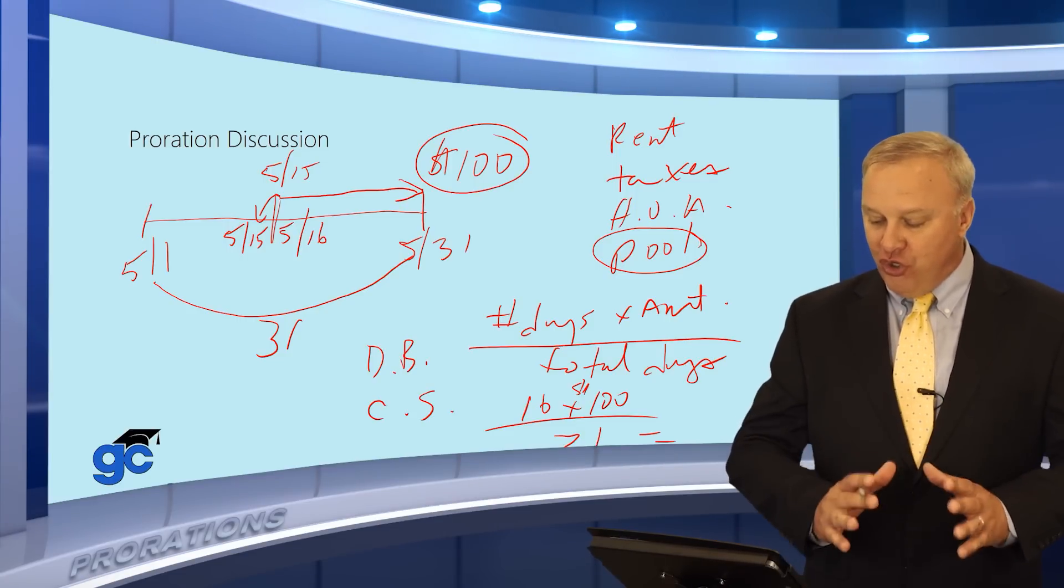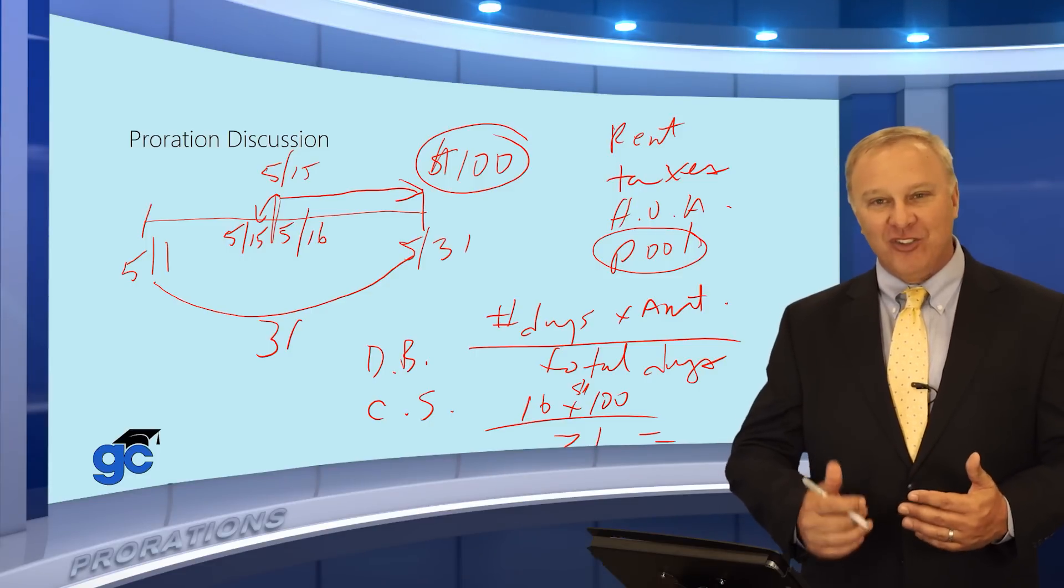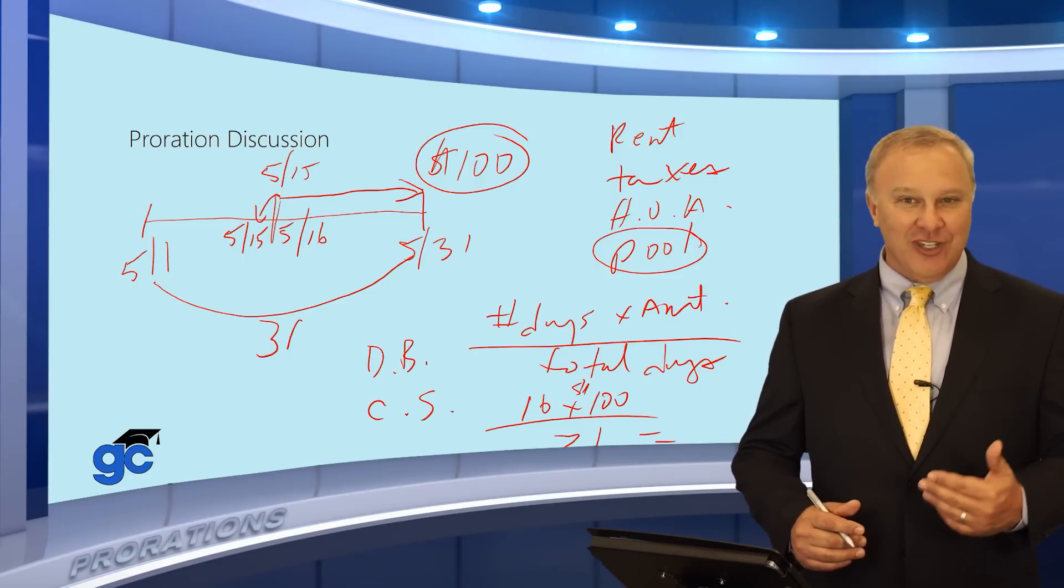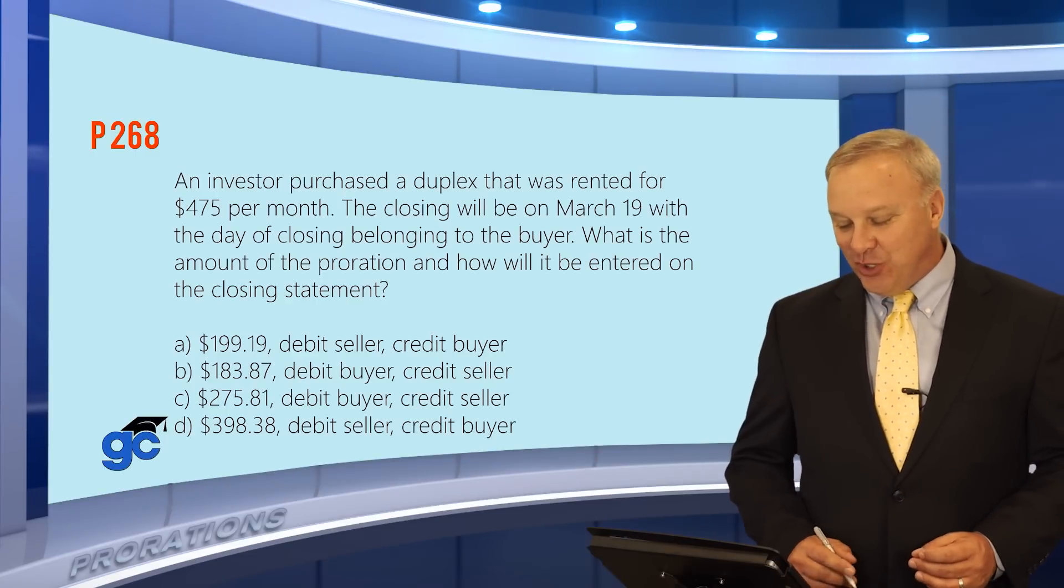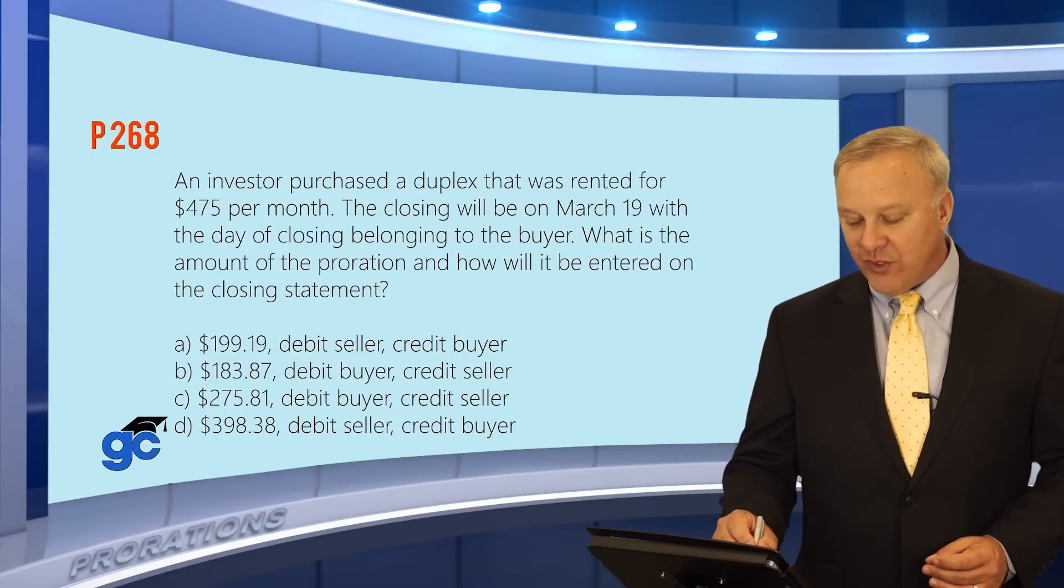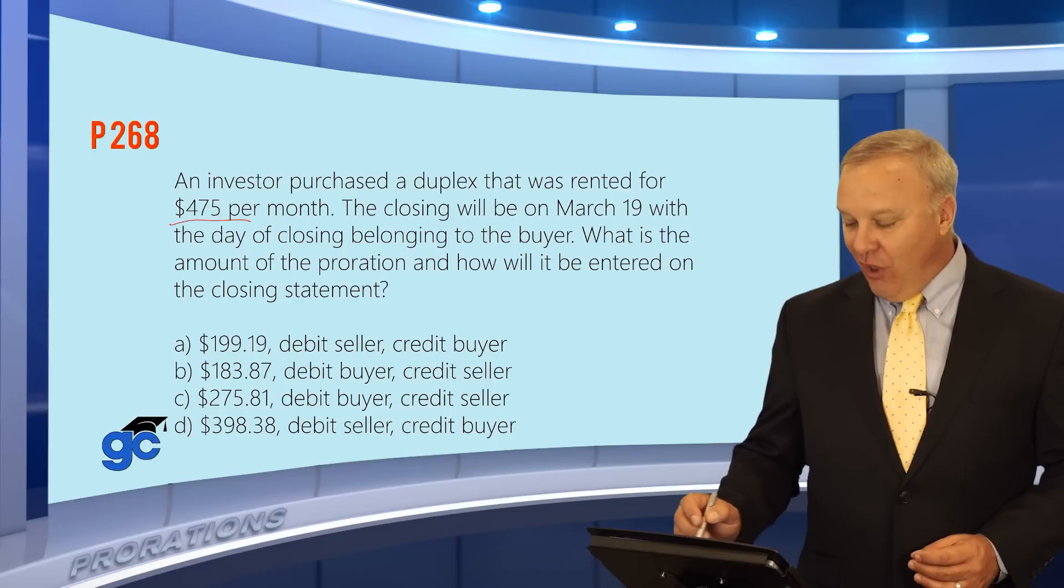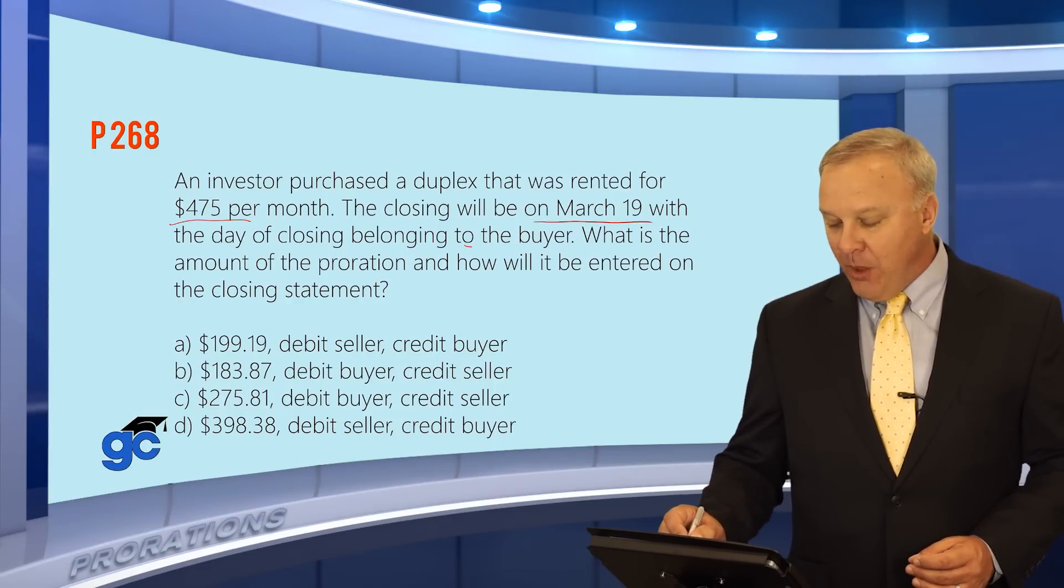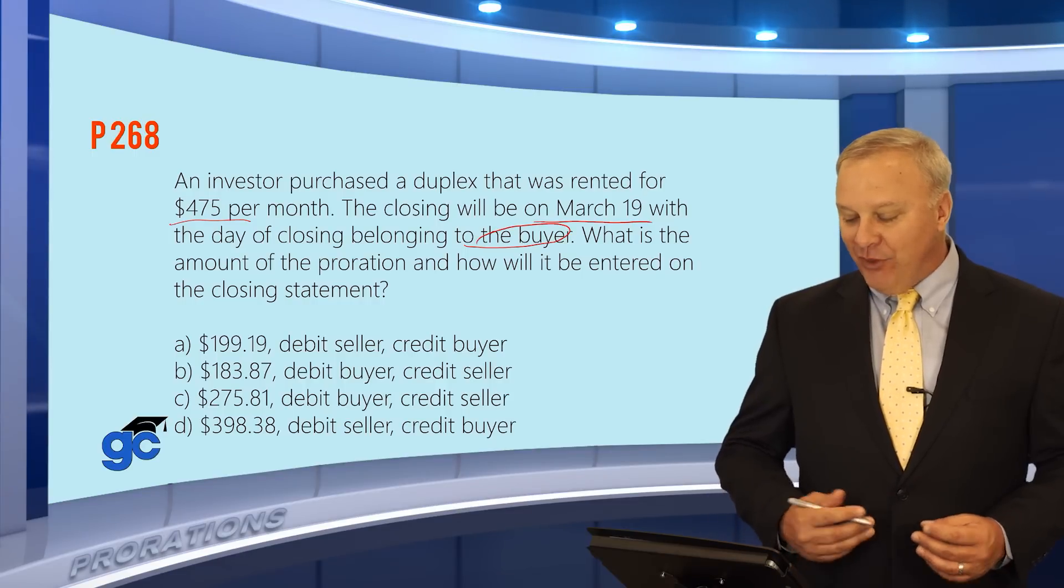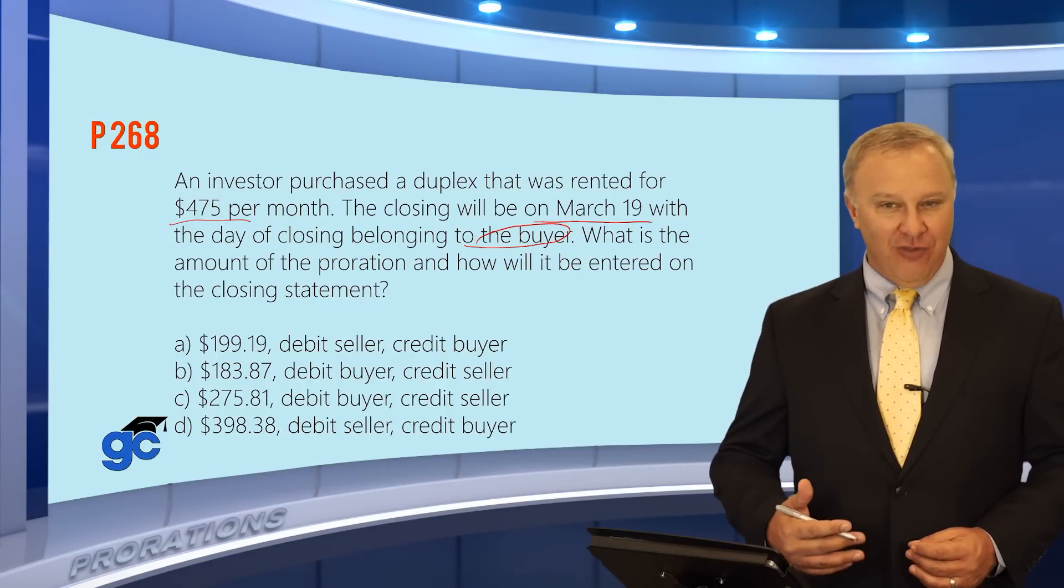Now, you should know this and understand this before you get a proration question. So let's go to an actual question and see how this works. In this question, it says that the investor purchased a duplex that was rented for $475 per month. The closing will be on March 19th, with the day of closing belonging to the buyer. What is the amount of the proration and how will it be entered on the closing statement?